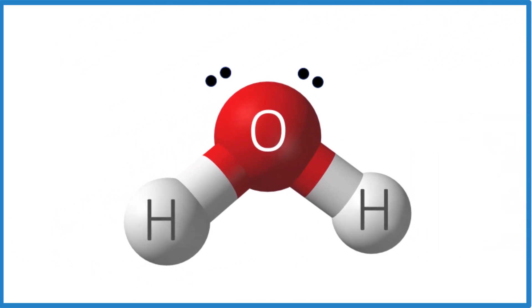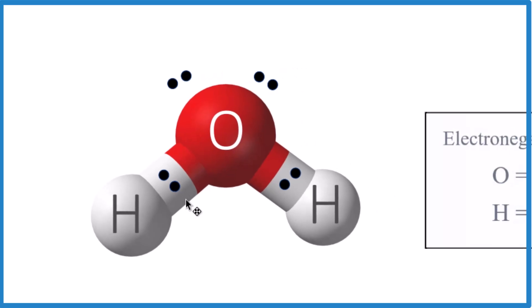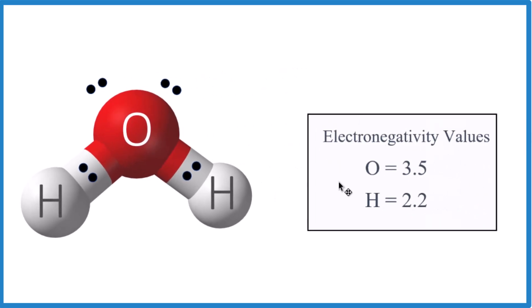We have bonding pairs of electrons right here between the hydrogen and oxygen. That's the covalent bond. But these electrons aren't shared equally because oxygen is more electronegative than hydrogen and pulls them over here.